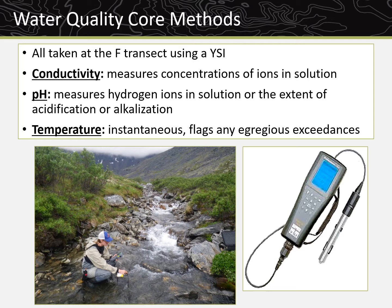pH is a measure of hydrogen ions in a solution. The more hydrogen ions, the more acidic the solution, and the fewer hydrogen ions, the more alkaline the solution. Runoff from activities such as mining can decrease the pH of water. Temperature measurements are instantaneous and primarily used to flag any egregious exceedances that could impact biota. In some instances, projects deploy temperature sensors to continuously measure water temperature, which can control the type and distributions of organisms living in a stream.